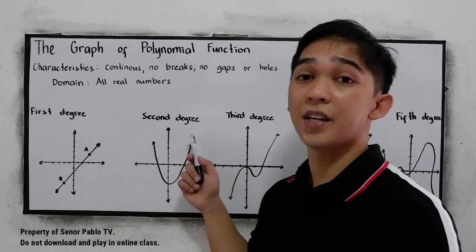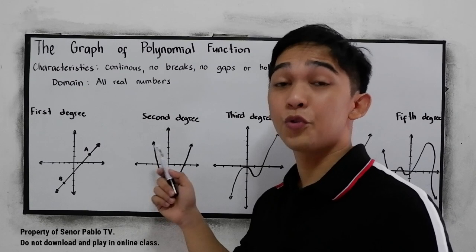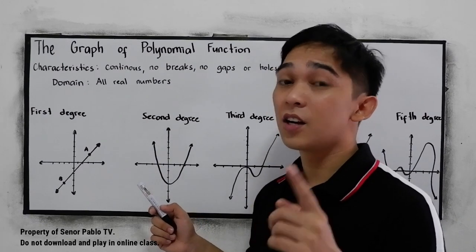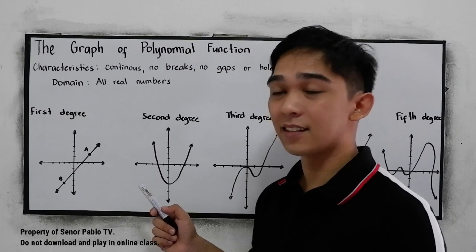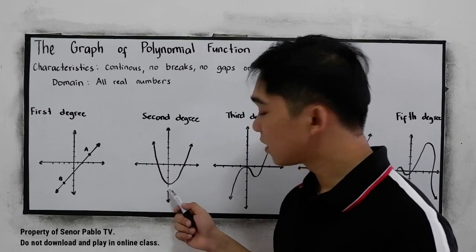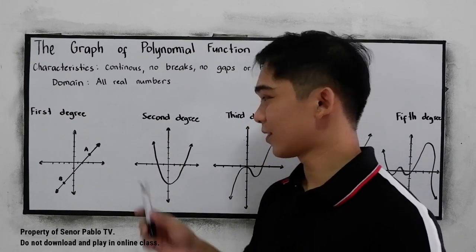The second degree is the quadratic function. It is taught when you're in your grade 9. So we have the parabola, a curve.